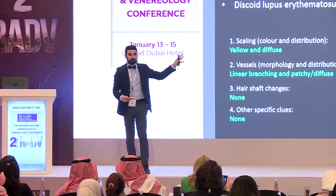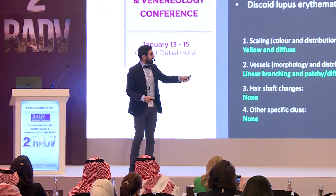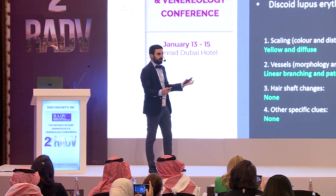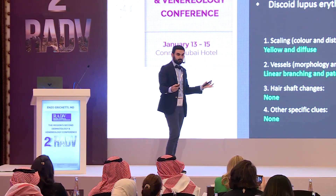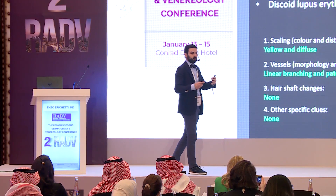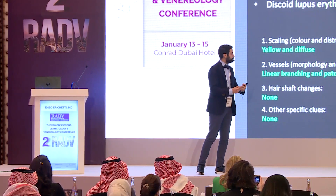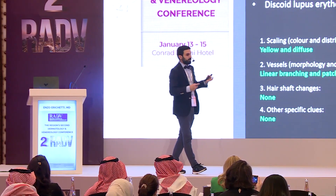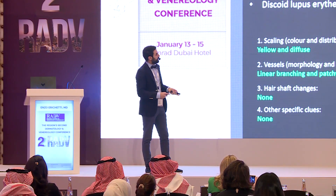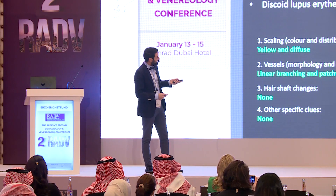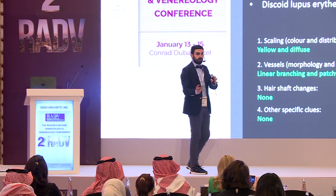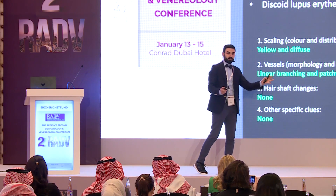Seborrheic dermatitis: in this condition we mainly have yellow scales because we also have spongiosis. We also have vessels — linear branching vessels. The vascular pattern is completely different compared to psoriasis.